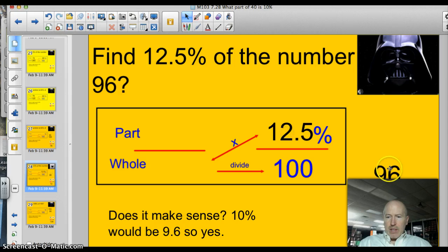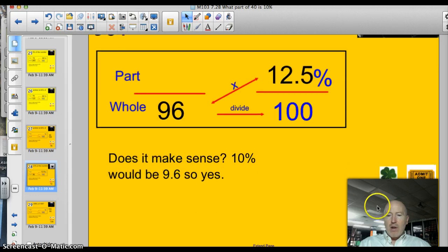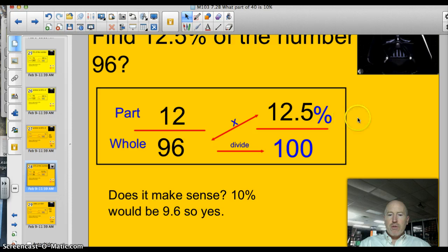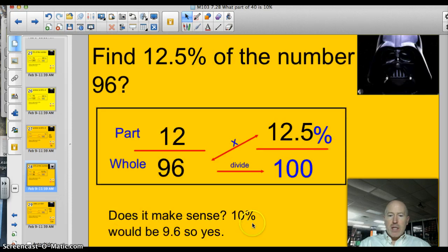Okay, we know we got 12.5%, and our whole number is 96. Now, this one got just a little tricky because of the decimal involved, but as long as you took and multiplied them straight away and divided by 100, your answer should have been 12. How did you do? Alright, does the answer make sense? Well, 10% of 96 would be 9.6, so 12.5%. Yeah, that's close. That makes sense.